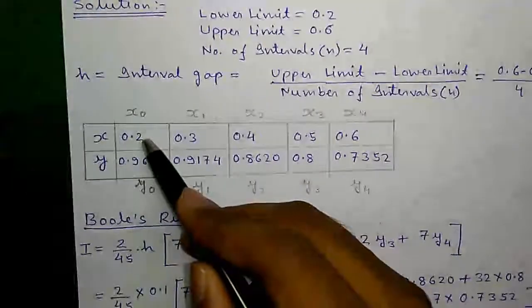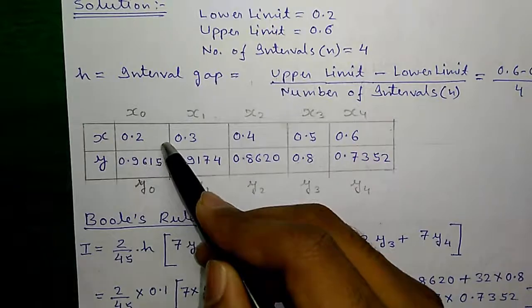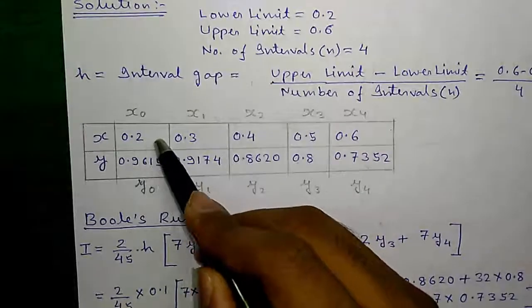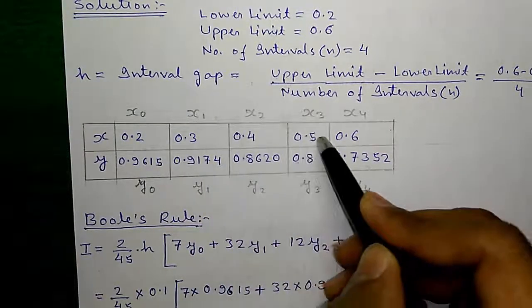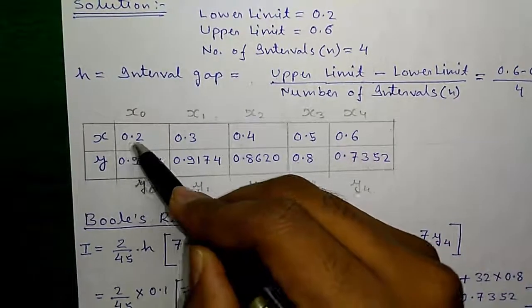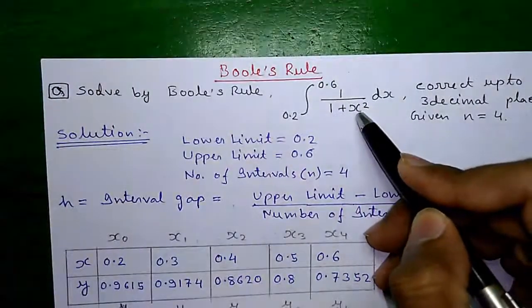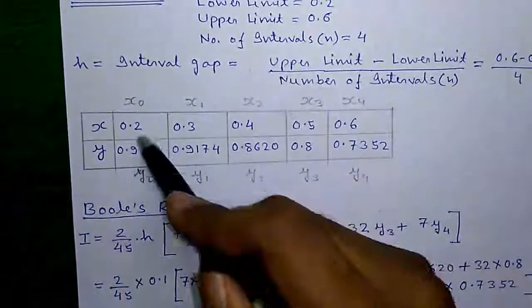The first value of x is 0.2. Next value will be 0.2 plus h, that is 0.2 plus 0.1 equals 0.3, and so on up to the upper limit. By putting this value of x into the expression 1 divided by 1 plus x squared, you will get the value of y.